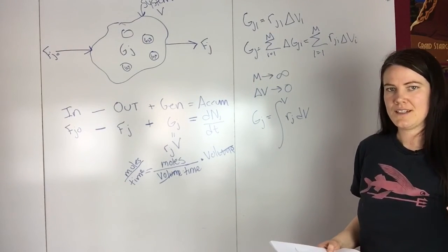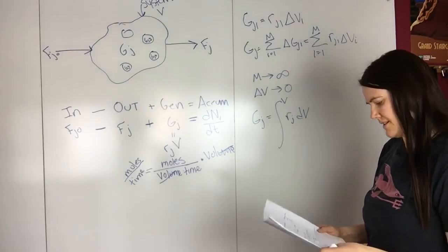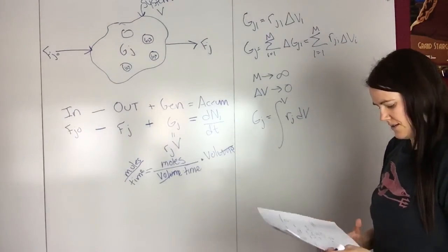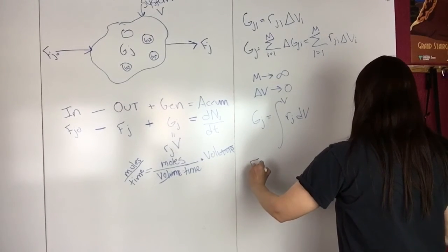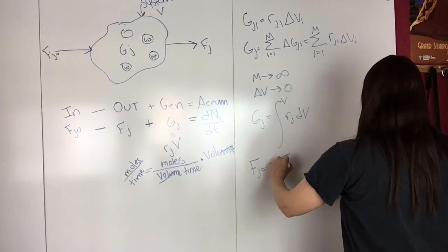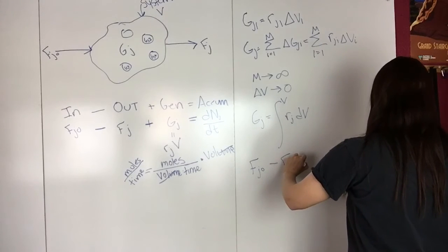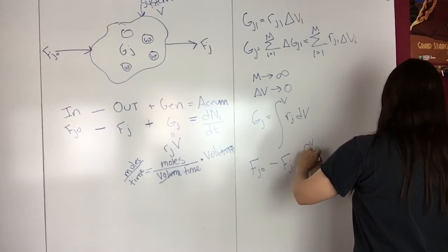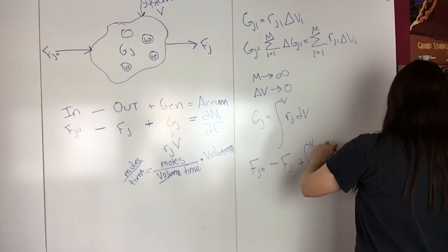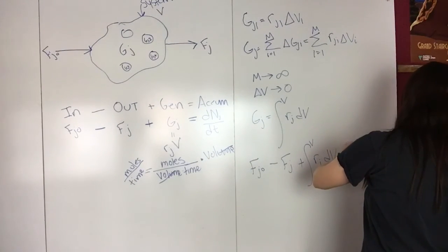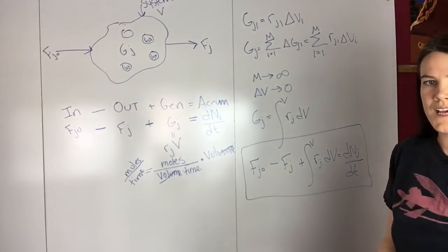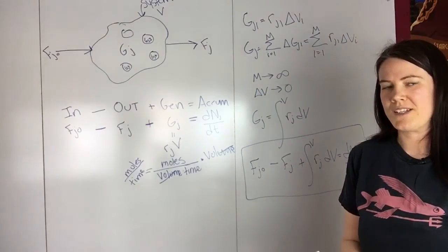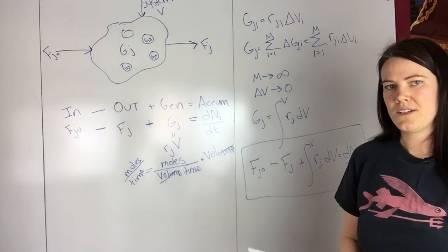And so rewriting this entire thing, we have FJ0 minus FJ plus the integral RJ dV equals dNJ over dT. And that is the general mole balance equation for reactors.